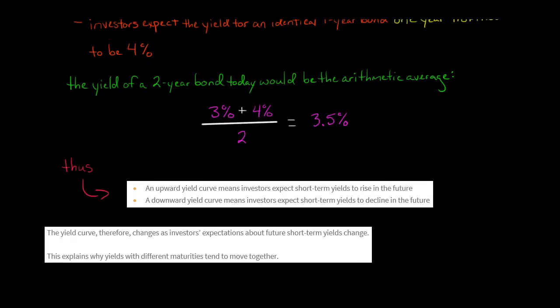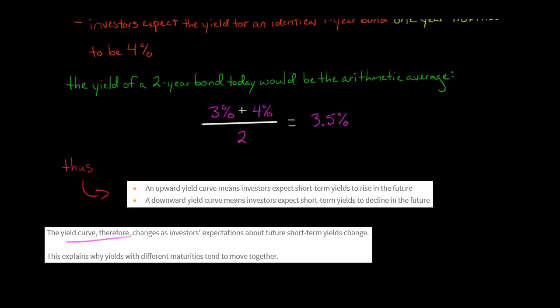So basically, if you have an upward yield curve — which is the most common type — investors are expecting short-term yields to go up in the future. If you have a downward or inverted yield curve, that means investors think short-term yields are probably going to go down in the future. The yield curve changes as investors' expectations about short-term yields change. This also explains why yields with different maturities, whether short-term or long-term, tend to move together.